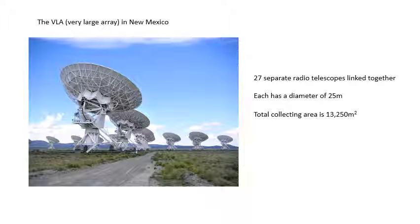Now one clever thing about radio telescopes is that you can link them together. This is the VLA in New Mexico, in America. The very large array. And it's 27 different radio telescopes all linked together. Each one is very big, 25 meters in diameter. And when they are linked together, the total collecting area, 13,250 meters squared. That's massive. One advantage of radio telescopes, you can link the signals together and effectively have a very, very large collecting power.